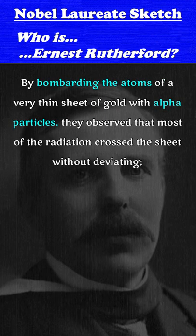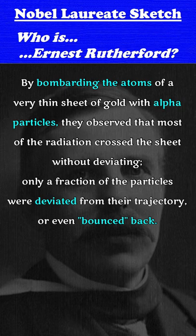By bombarding the atoms of a very thin sheet of gold with alpha particles, they observed that most of the radiation crossed the sheet without deviating. Only a fraction of particles were deviated from their trajectory or even bounced back.